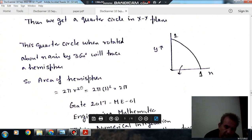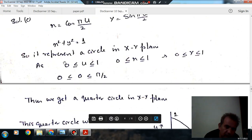So that is 2π × 1² = 2π. So the answer is option C, 2π.